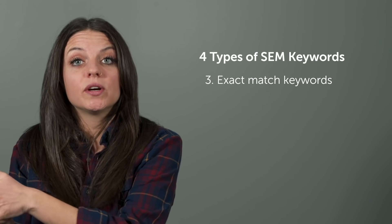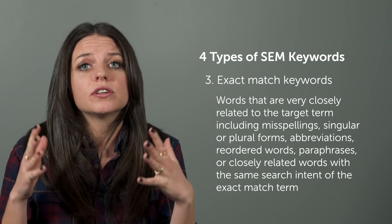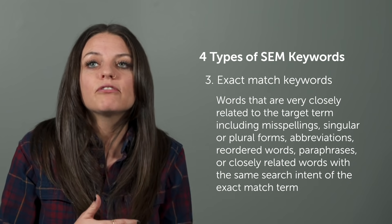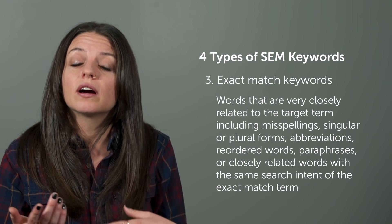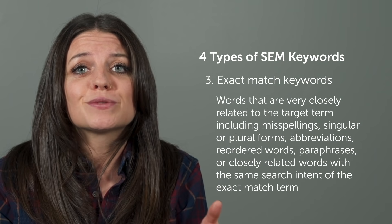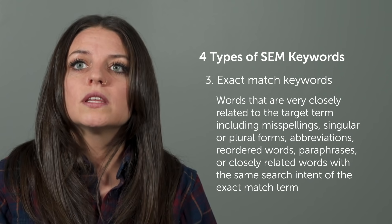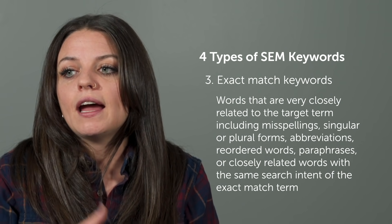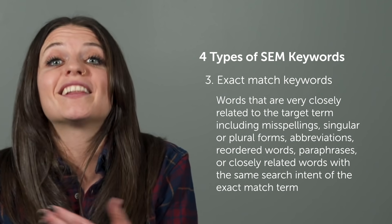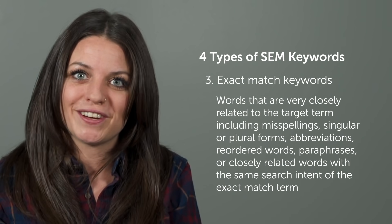Next up are exact match keywords. These include things really similar to your target keywords but may include paraphrases, abbreviations, or a reorder of the words — terms being searched with the same search intent as your target phrase. So if I'm searching for hats for lizards, another way to say that would be head coverings for pet lizards, to broaden your reach.